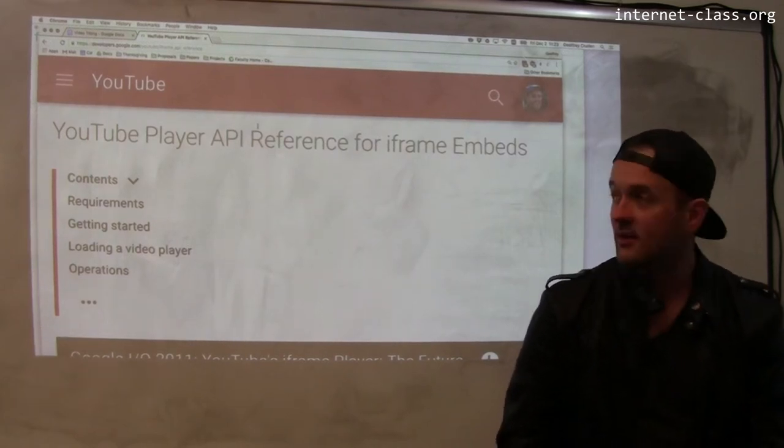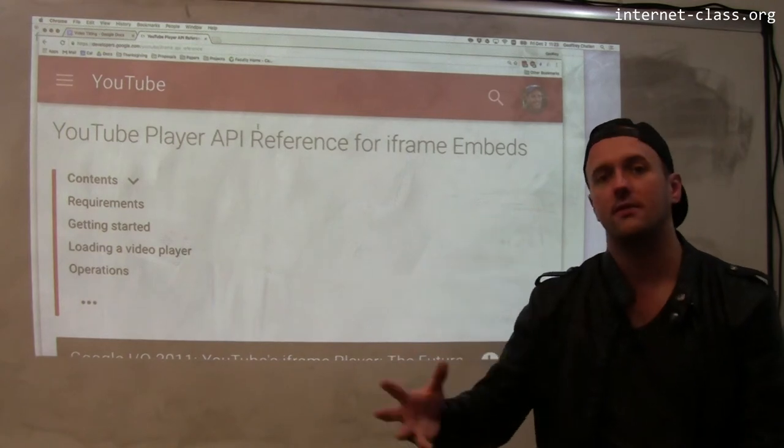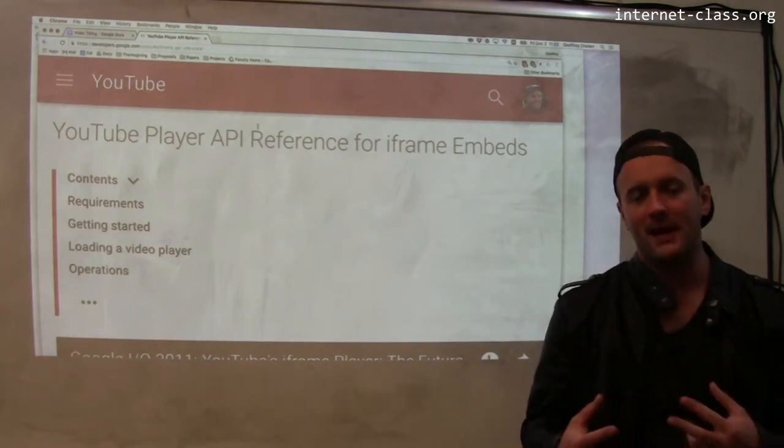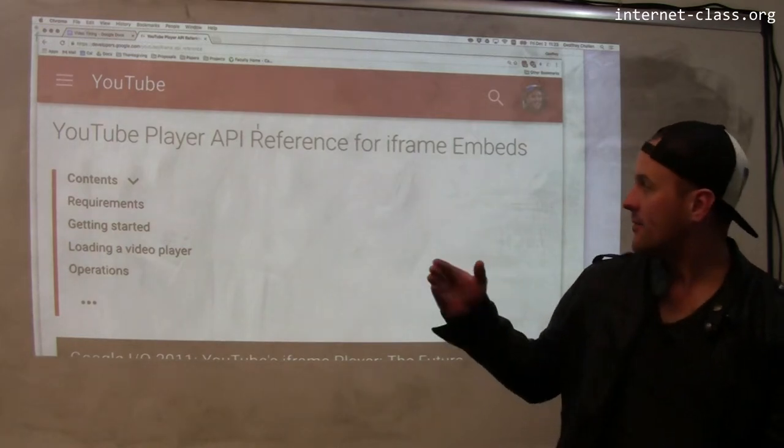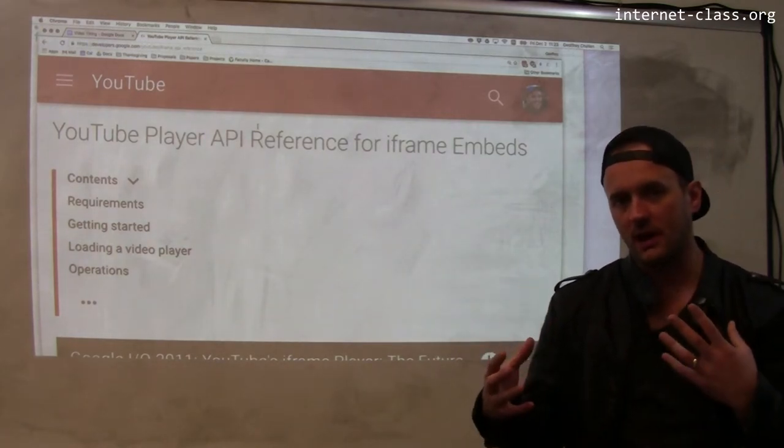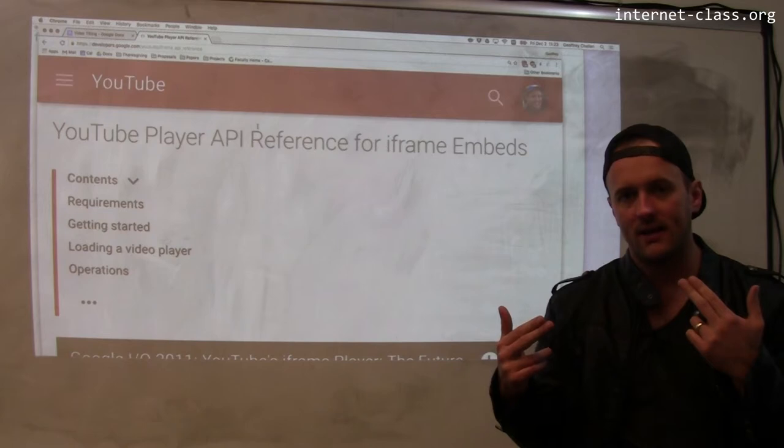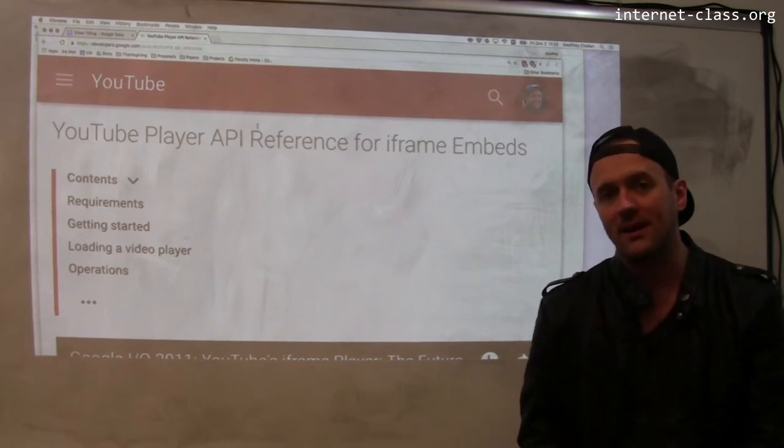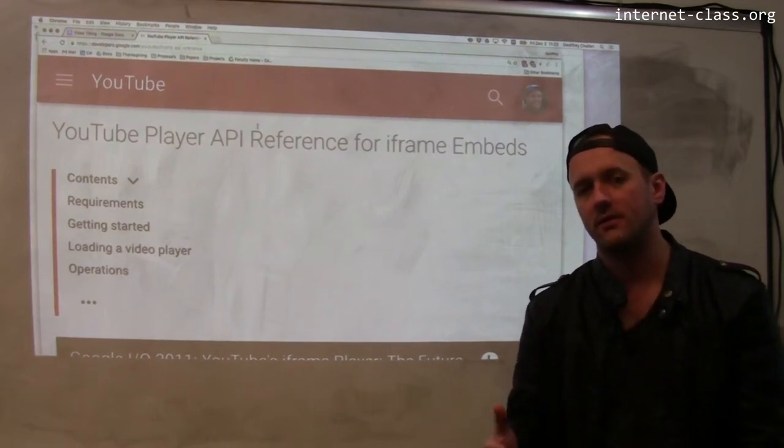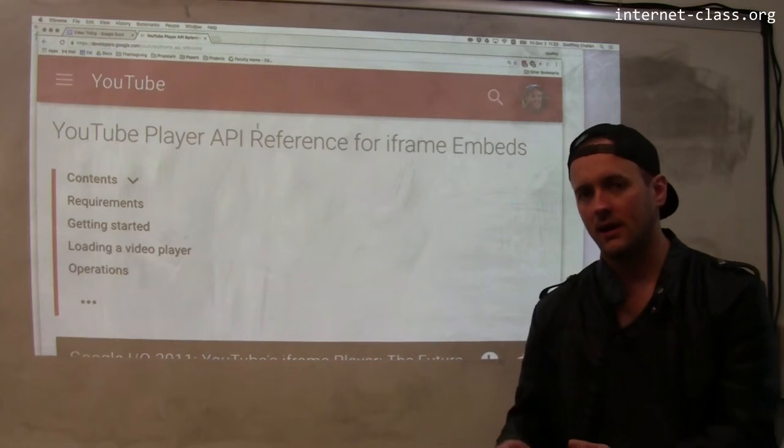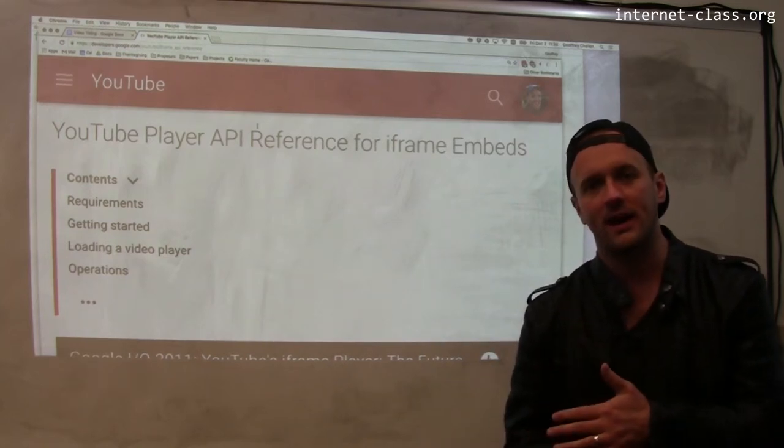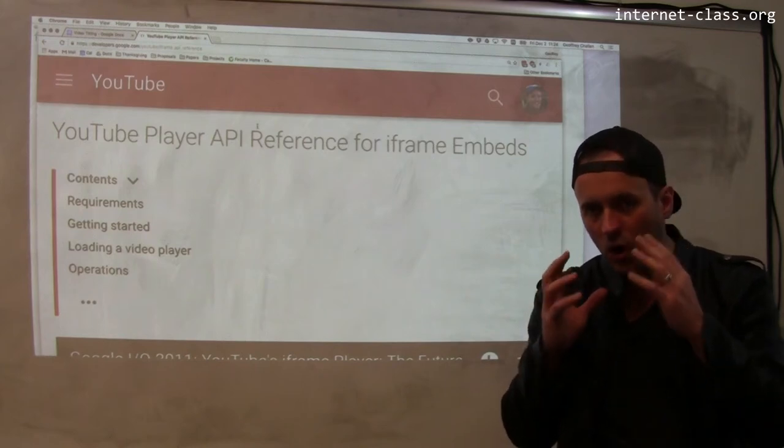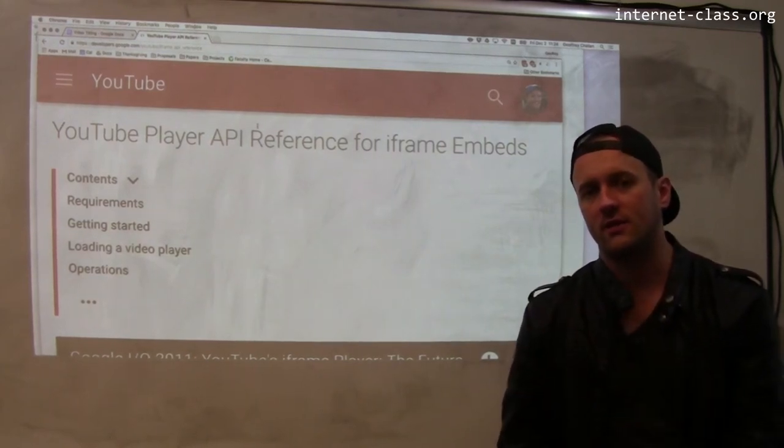So the starting point for this is the YouTube player. We're serving videos from YouTube. We're embedding them on the page. And when you do that, you get an iframe that's used by YouTube to serve the content. But that iframe actually has an API. So the iframe has an interface that allows you to retrieve various information about the player. It allows you to change videos. It allows you to determine what time the video is at.